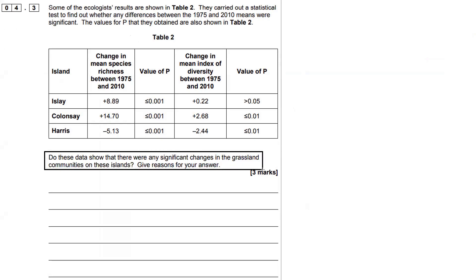I'm going to go through an AQA question for A-level biology on the value of P. The question is: do these data show that there were significant changes in the grassland communities on these islands? Give reasons for your answers. You can pause the video and read the question through for a little bit if you want.